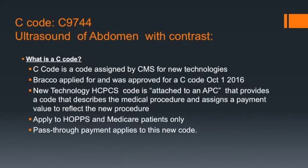C9744 is a new technology Healthcare Common Procedure Coding System, or HCPCS, Level II code. A C-code is assigned by CMS for new technologies. C9744 is described as ultrasound of abdomen with contrast. Bracco applied for and was approved for this C-code on October 1, 2016. This code is attached to an Ambulatory Payment Classification, or APC, and a pass-through payment is payable. It only applies to hospital outpatient prospective payment system patients.